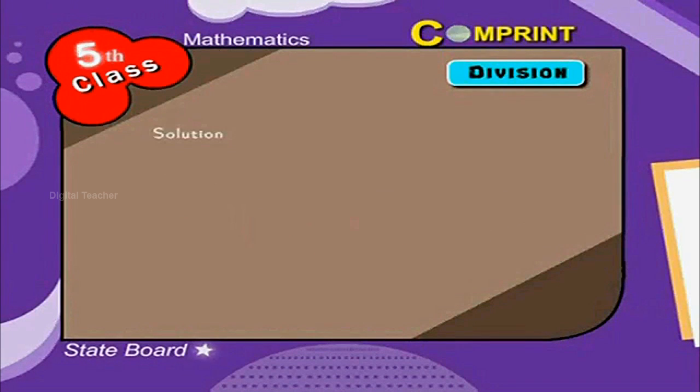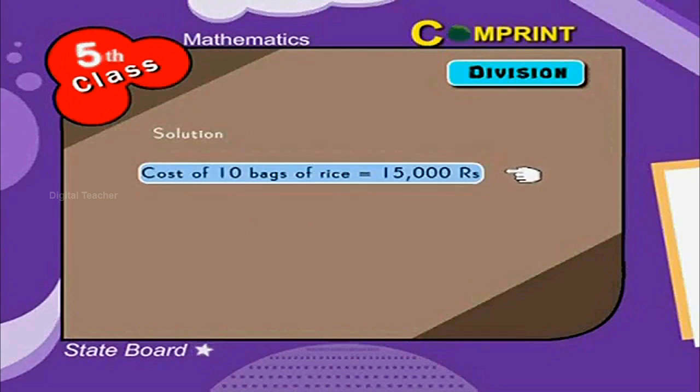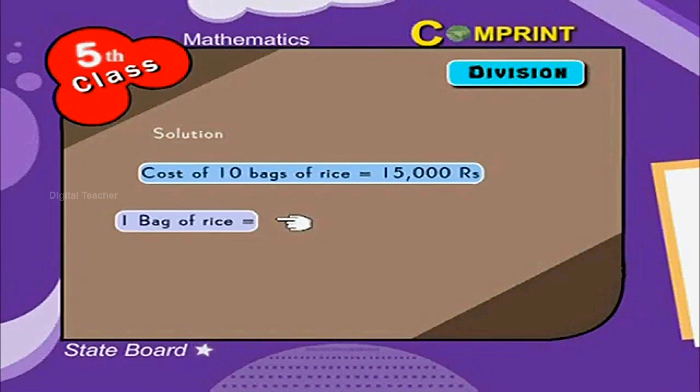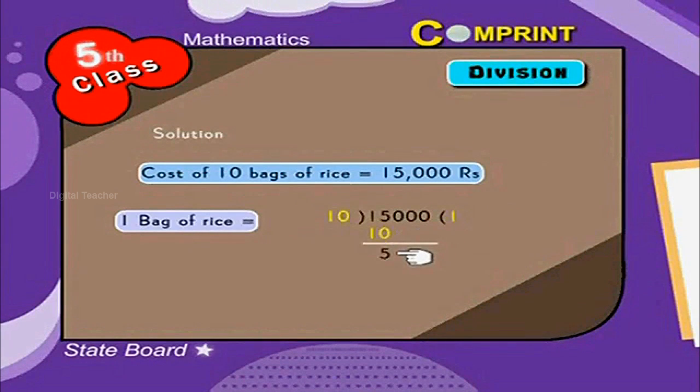Look at the solution. Cost of 10 bags of rice is equal to 15,000 rupees. To find the cost of one bag of rice, 15,000 divided by 10. 10 into 1 is 10, remainder is 5, add 0. 10 into 5 is 50, the remainder is 0. The remaining two zeros should be placed at quotient. Therefore, cost of one bag of rice is equal to 1500 rupees.